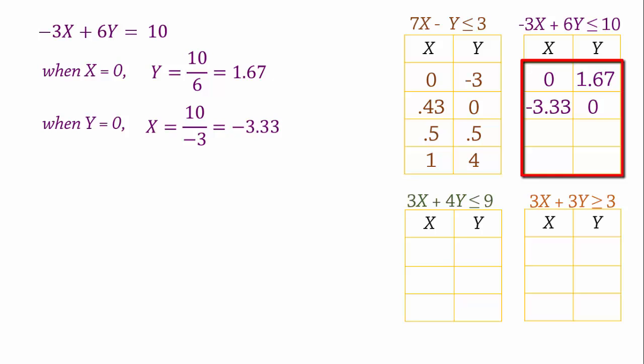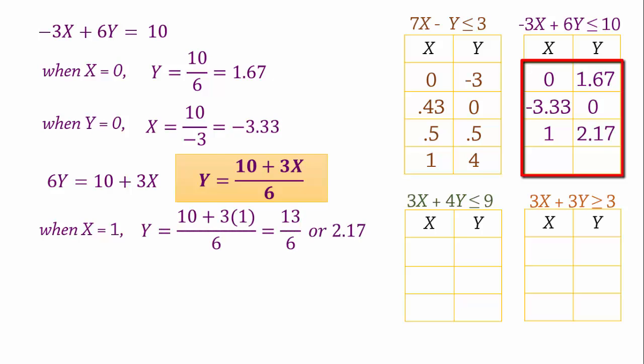Rewriting the equation, we have 6y equals 10 plus 3x. So that y equals 10 plus 3x divided by 6. When x equals 1, y equals 2.17. And when x equals 2, y equals 2.67. So it is hard to find whole number points for this line.